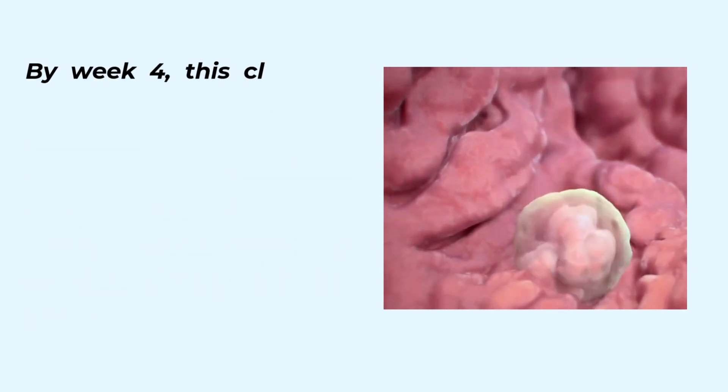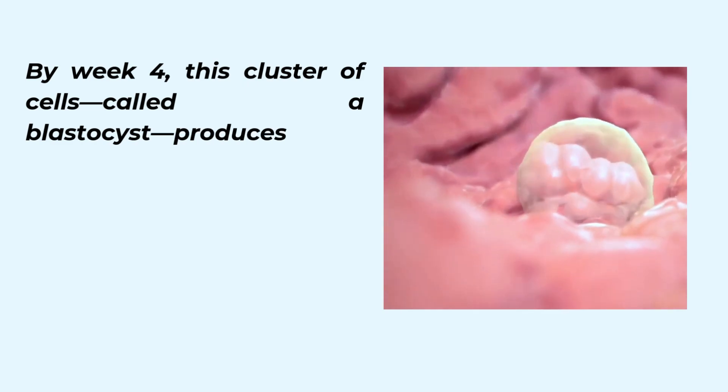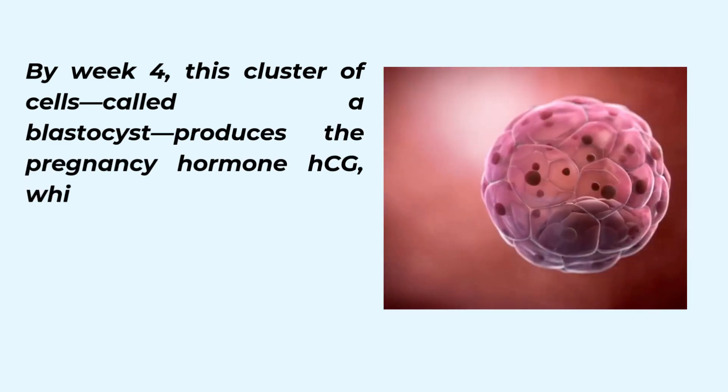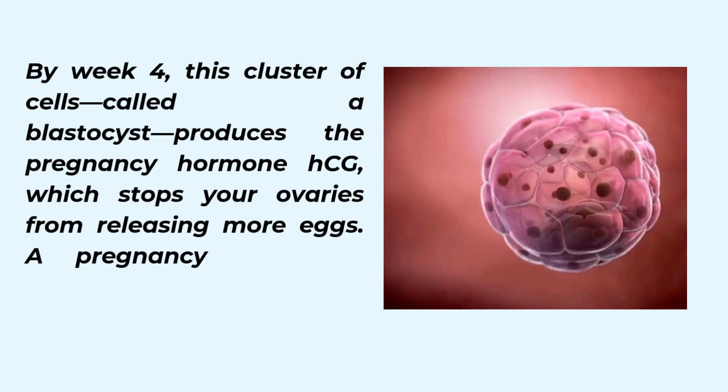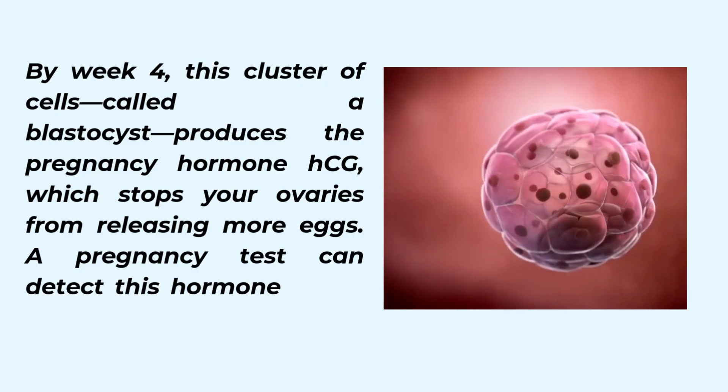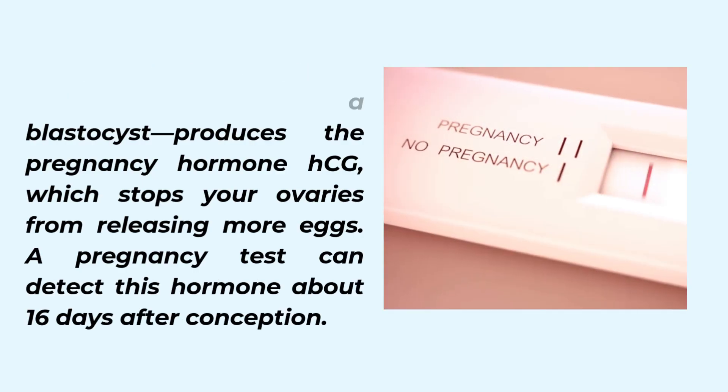By week four, this cluster of cells called a blastocyst produces the pregnancy hormone HCG, which stops your ovaries from releasing more eggs. A pregnancy test can detect this hormone about 16 days after conception.